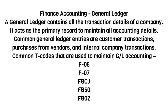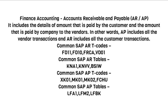Common T-codes that are used to maintain GL accounting: F06, F07, FBCJ, FB50, FB02.